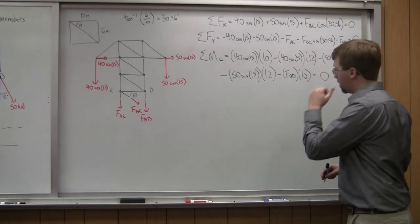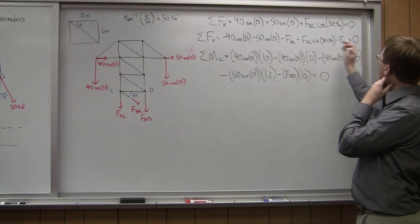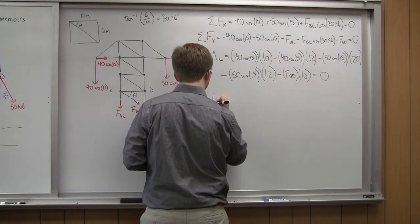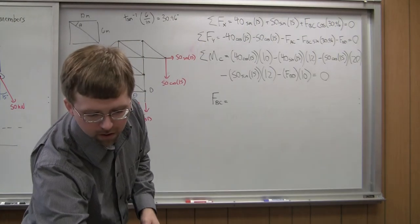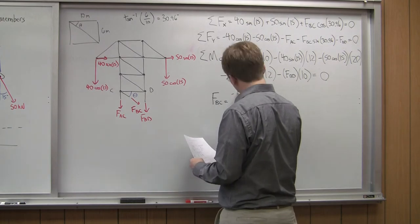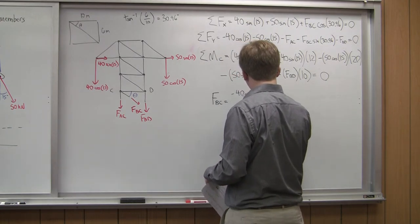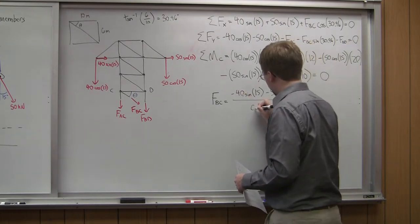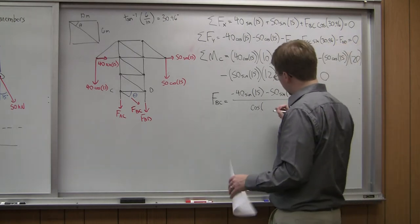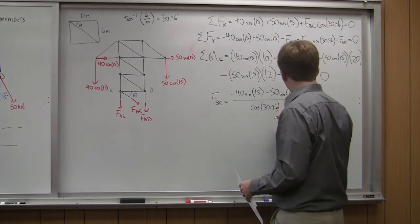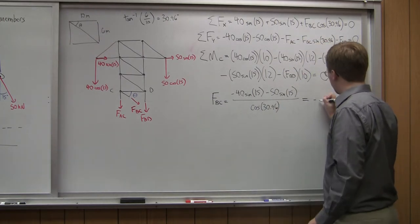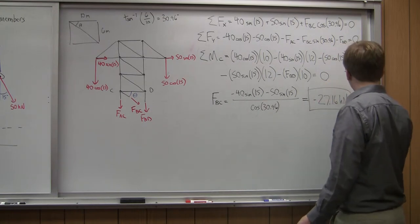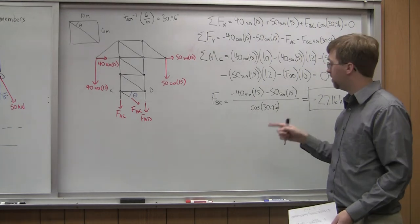In the y direction I have three unknowns — too many. In the x direction I have one unknown, so I can solve for FBC. FBC equals negative (40 sin15 + 50 sin15) divided by cosine of 30.96. That gives FBC = negative 27.16 kilonewtons. Since it's negative, that indicates compression — member BC is being compressed.